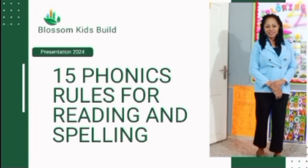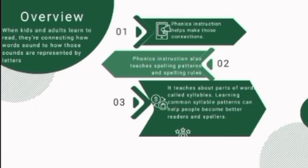We need to follow some rules of spelling. When kids and adults learn to read, they are connecting how words sound to how those words are represented by letters. When someone is learning to read, they are trying to connect sounds to their letter representations. What we hear is sound, and those sounds are represented by letters. Phonics instruction helps us make those connections.